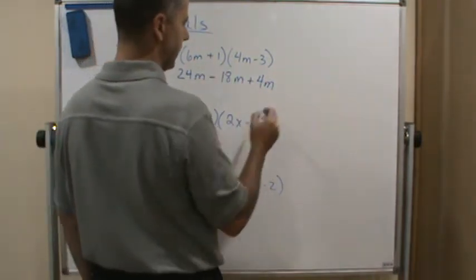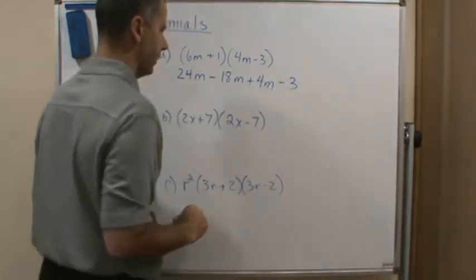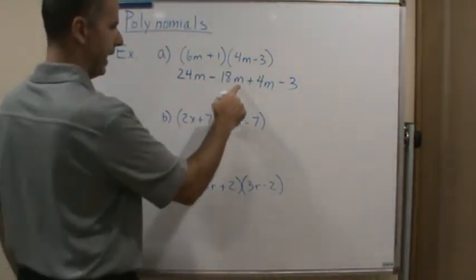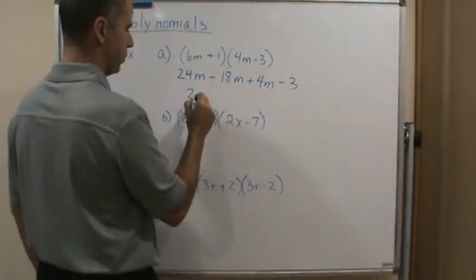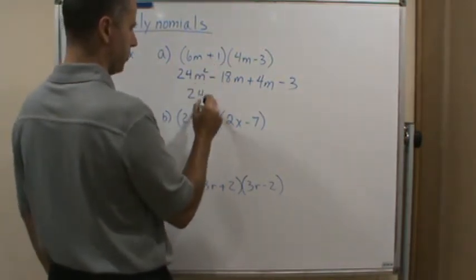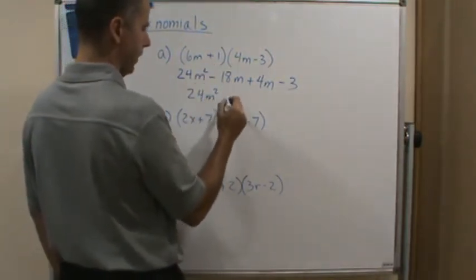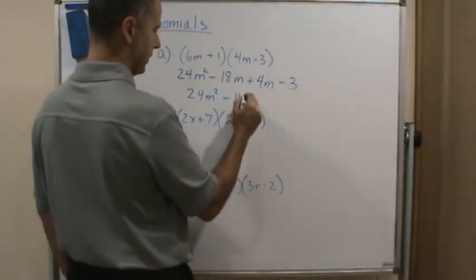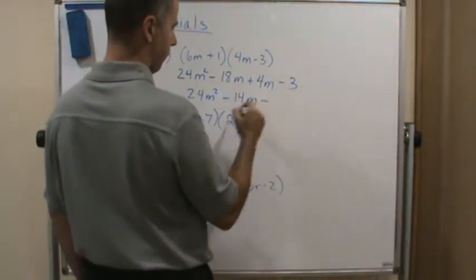1 times negative 3 is minus 3. Now I'm going to add the two middle terms, so I get 24 - oh squared, sorry - 24m squared minus 14m minus 3.